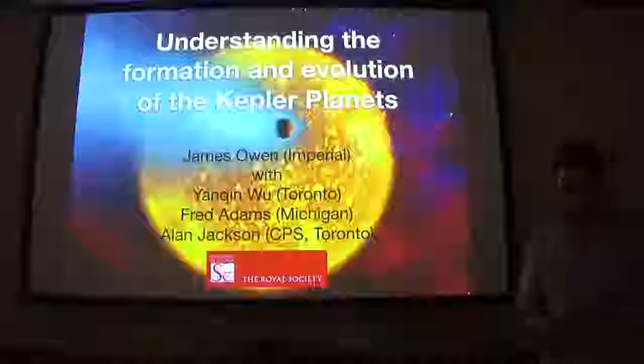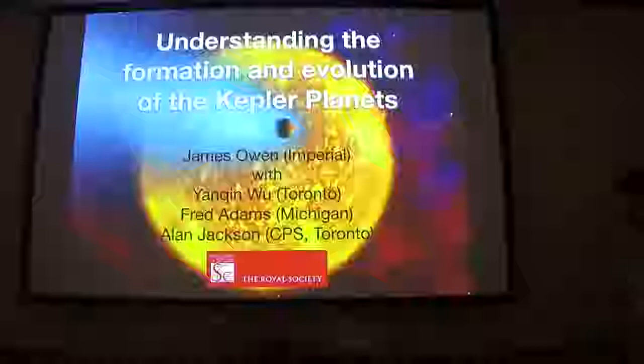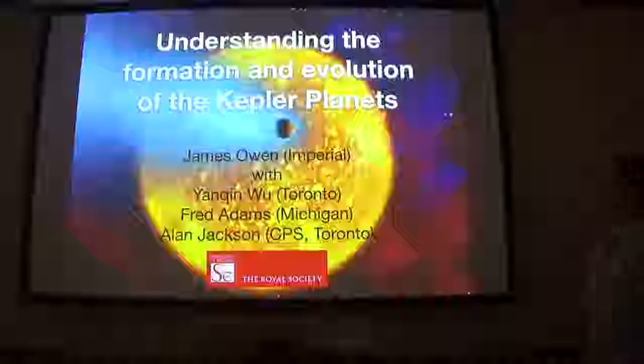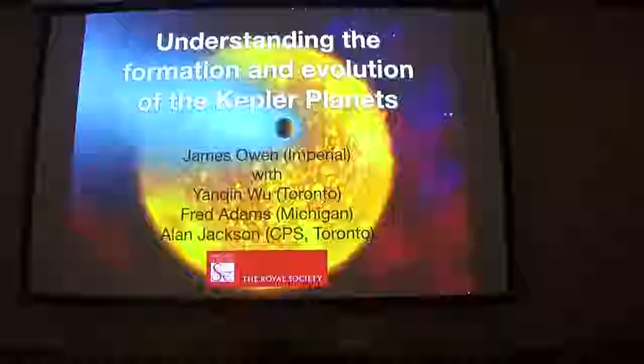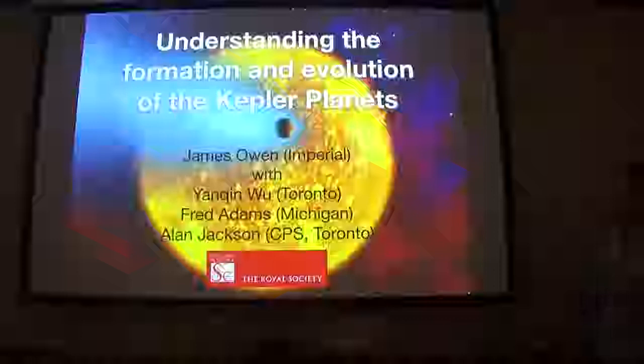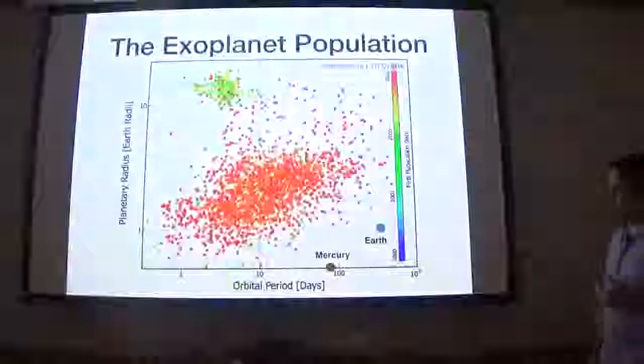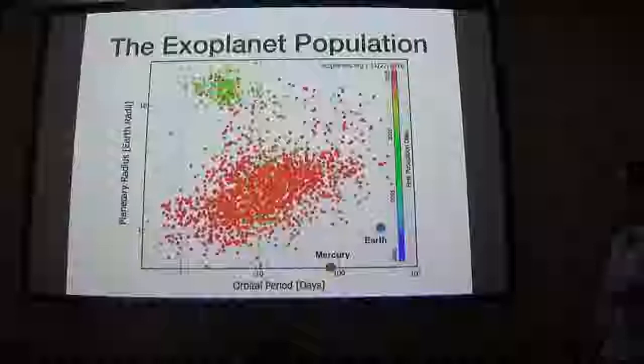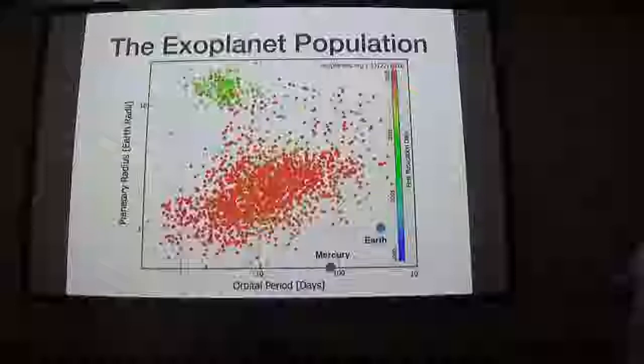I'm going to try and give you a sense of the important physics involved in explaining the origin of these close-in planets that Kepler has been finding in abundance. I like to start my talks with a motivating plot, and in exoplanets this is very easy: you can just go on the exoplanet archive and download a plot of the exoplanet population, showing planet radii as a function of orbital period.